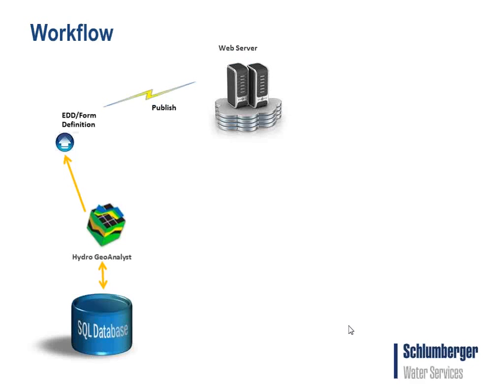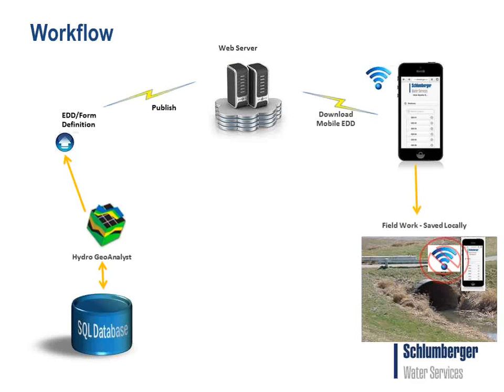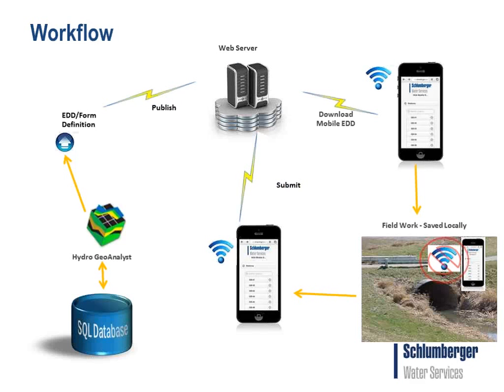When you publish to the web server, you have the ability to connect to that EDD with your mobile device, whether it's your phone or your tablet. While doing that, you do need an internet connection. However, once you've connected the first time, your mobile device will download the EDD so that you have the forms you need to enter data directly on your phone. You can then head into the field and do your field work with no internet connection, as everything is saved locally on your mobile device. When you come back to somewhere with an internet connection, you submit the data from your mobile device back to the web server, and HGA can download it and bring it into your database.